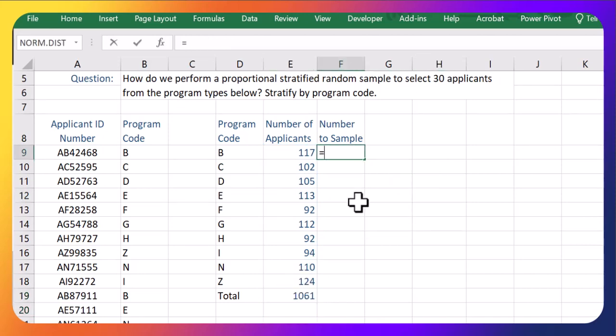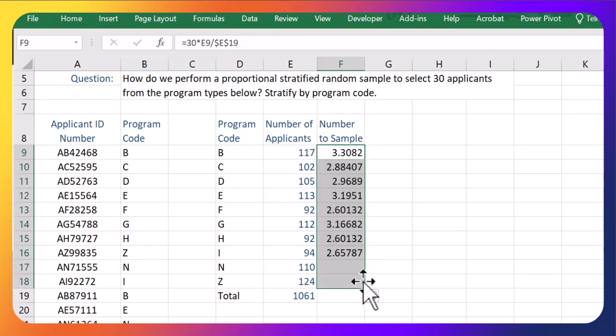And now let's figure out how many of each of the groups to grab. Let's say we want 30 applicants total. We are going to take 30 times by this number divided by the total to figure out how many of each of the groups to sample. So I should sample roughly three of this first group, three of the next, three of the next, and so on and so forth.